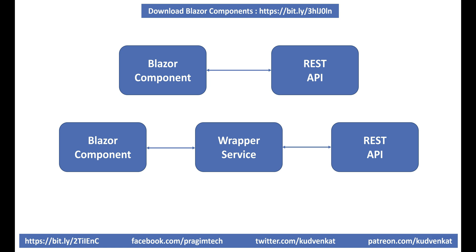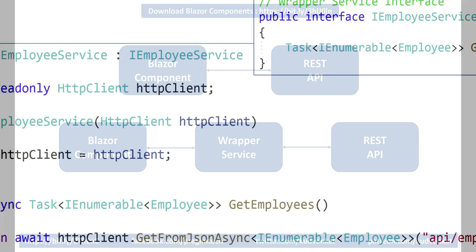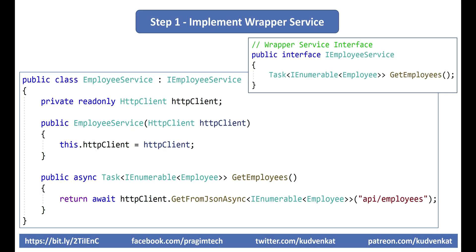If you're wondering why a separate wrapper service — well, as I said, for separation of concerns, we do not want our Blazor component to be doing too many things. If a component needs server-side data, it injects this wrapper service and calls it. So our natural first step is to implement a wrapper service that calls the server-side REST API using the built-in HttpClient class.